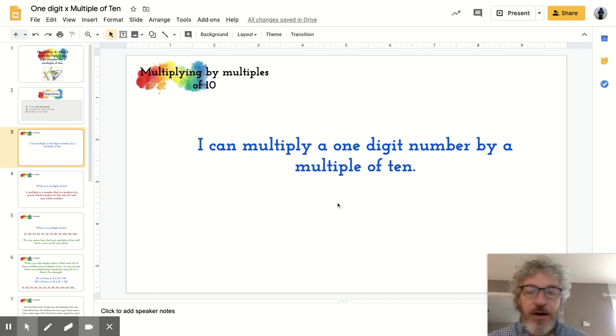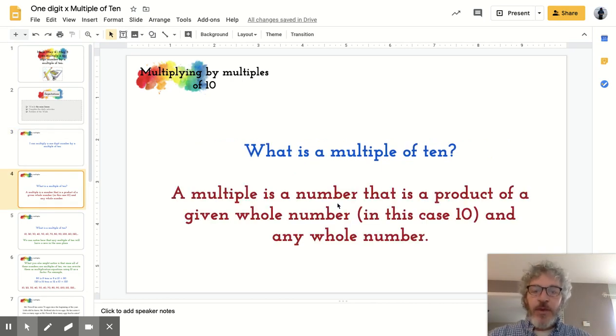So here's another look at our learning objective, and it's written in student-friendly language. I can multiply a one-digit number by a multiple of 10. What is a multiple of 10? A multiple is a number that is a product of a given whole number, in this case 10, and any whole number.